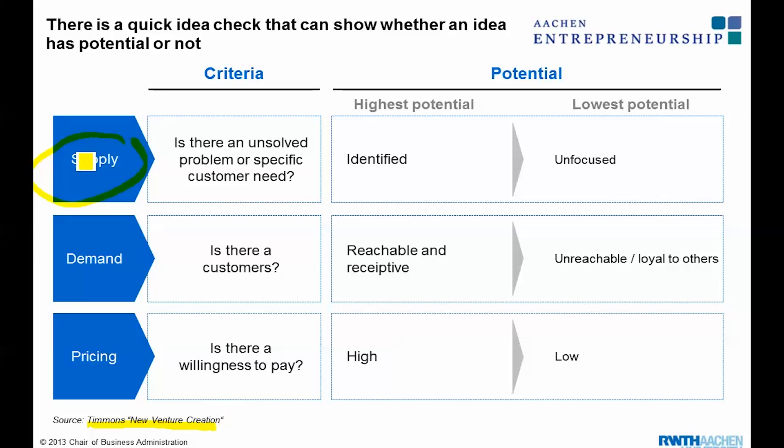So he talks about supply side, demand side, and pricing. And basically this is the three questions we had before. So is there an unsolved problem or specific customer need? Are you able to identify that or are you unfocused? And unfocused is with the lowest potential. Identified need or identified problem is the highest potential.